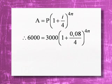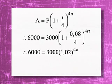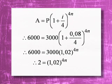Let's delete the bracket first, and in the bracket we get 1.02. Let's now divide by 3000 on both sides, and we will have 2 equals this bracket.